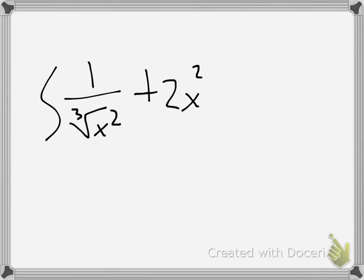Alright, hello class. I'm going to go through the gateway that we did in class on Monday. I'm just going to do every problem, probably just one video, and you can slow it down and listen to me walk through it over and over. The first one is the integral of 1 over cube root of x squared plus 2x to the 2 fifths plus 7x to the minus 1 plus e dx.